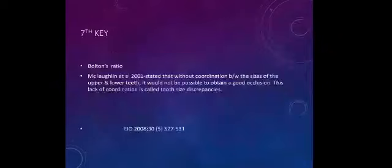The anterior ratio is 77.2 percent and the overall ratio is 91.3 percent. Anterior ratio 77.2 percent means that the total tooth material of mandibular anteriors from canine to canine should be 77.2 percent of the total tooth material of maxillary canine to canine. For overall ratio, the total tooth material from first molar to first molar of mandible should be 91.3 percent of maxillary total tooth material molar to molar.